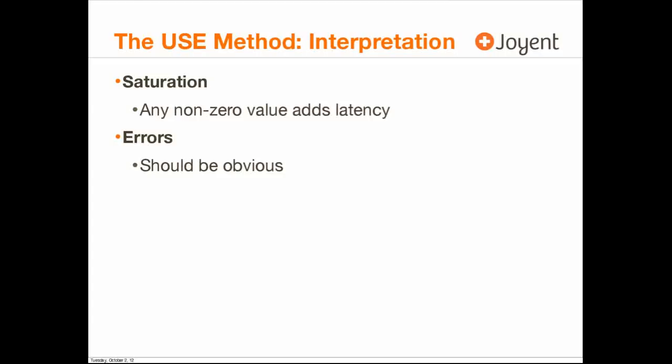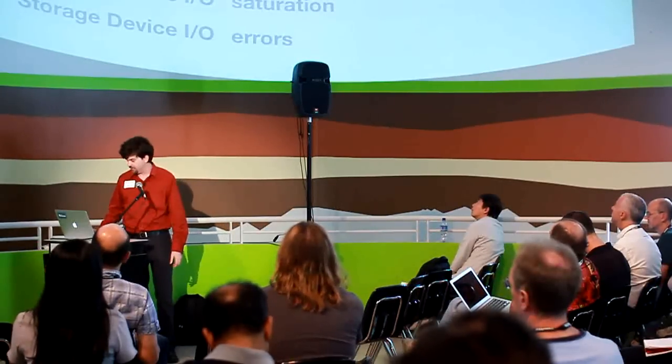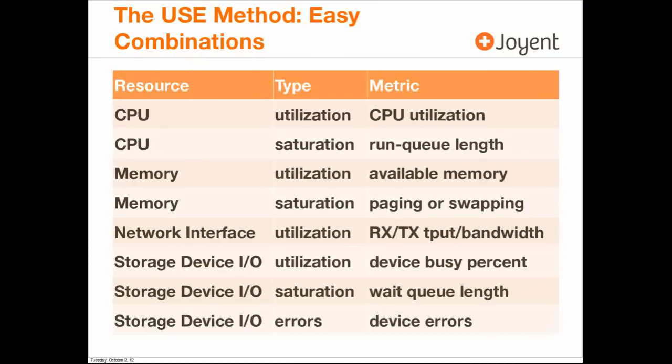Saturation is very easy to interpret — any non-zero value adds latency. Saturation is the queue length, how long you've waited. For errors, errors should be obvious. If something has died, like the customer with the disks that had died. For the USE method easy combinations: CPU utilization — that one's easy. Network interface utilization — also pretty straightforward. CPU saturation is the run queue length, also called the dispatcher queue length: how long threads in the ready-to-run state were queued waiting for their turn on CPU.